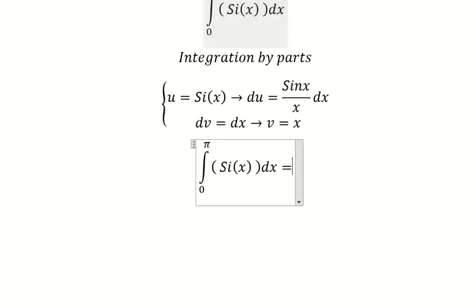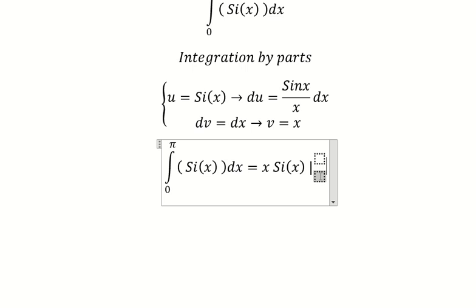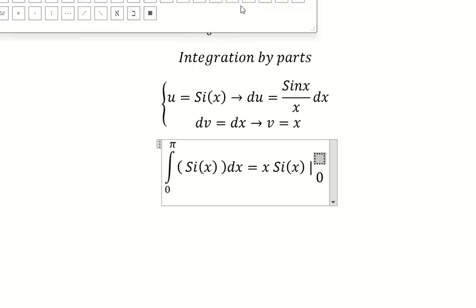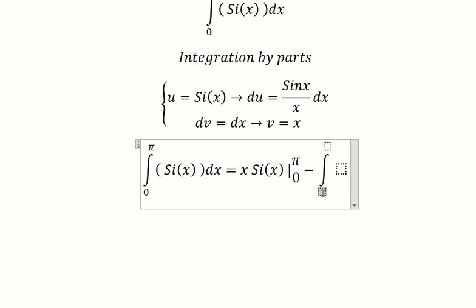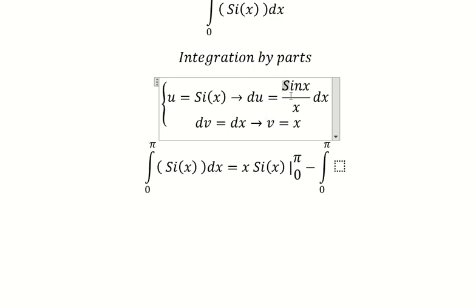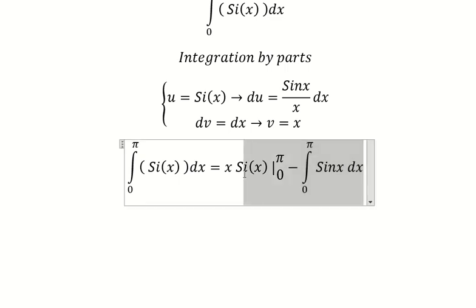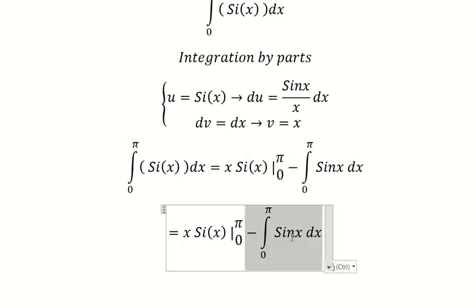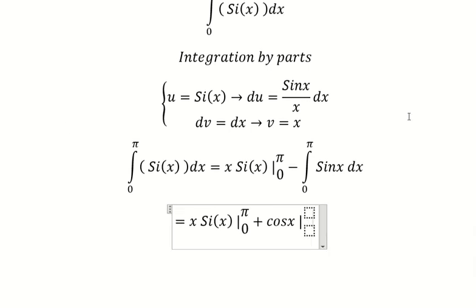So in this one we have u multiplied by v, minus the integral from 0 to b. We have u multiplied by v, so this one multiplied by s gives us sine of s. And now we have the integral from 0 to b, and the integration of this one with the negative gives us cosine x.